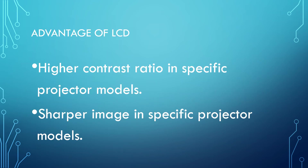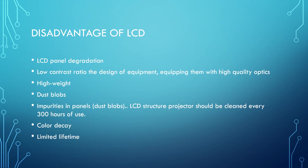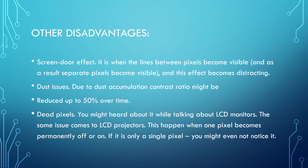The advantages of LCD are: they have a higher contrast ratio in specific projector models and sharper images in specific projector models. The disadvantages of LCD are: LCD panel degradation, low contrast ratio, the design of equipment equipping them with high quality optics, high weight, impurities in panels like dust blocks. LCD projectors should be cleaned every 300 hours of use. They also have color decay and are limited in lifetime. Additionally, there is the screen door effect — when the line between pixels becomes visible — and dust issues, where dust accumulation may reduce contrast ratio by up to 50% over time.